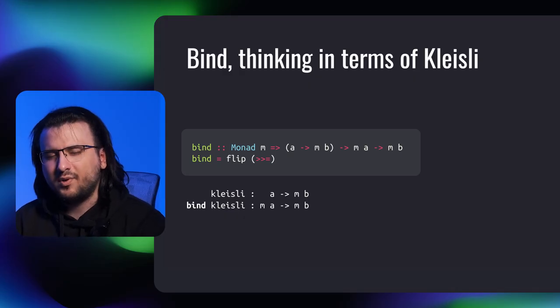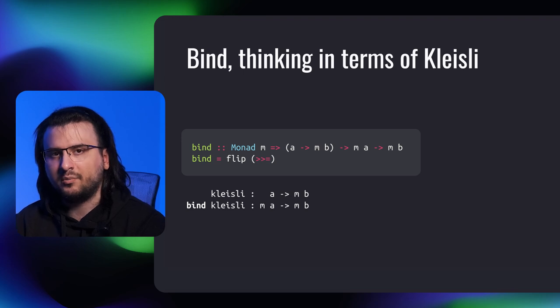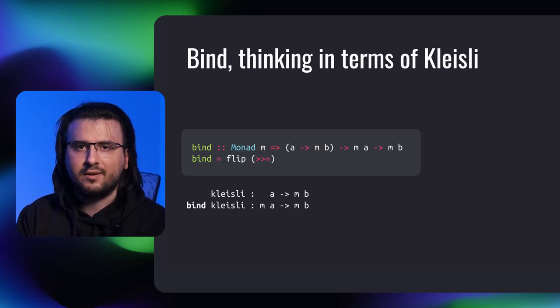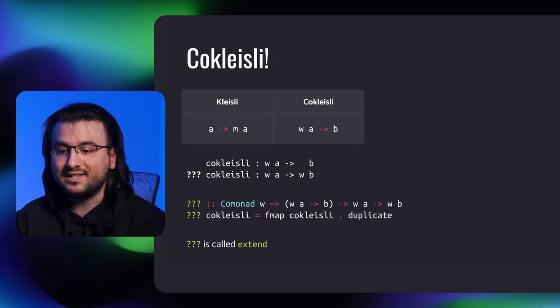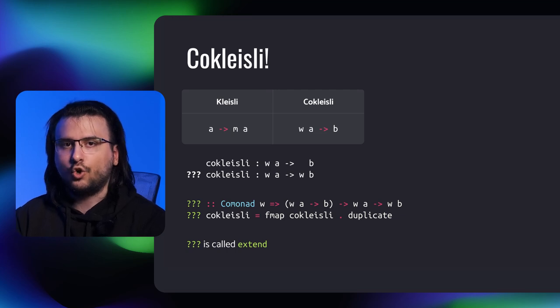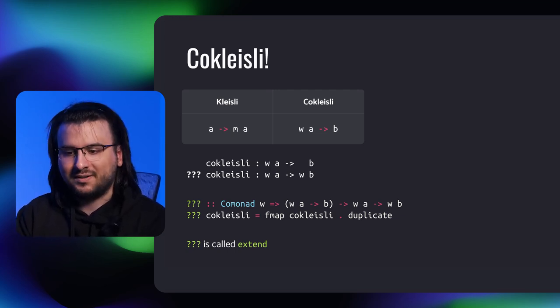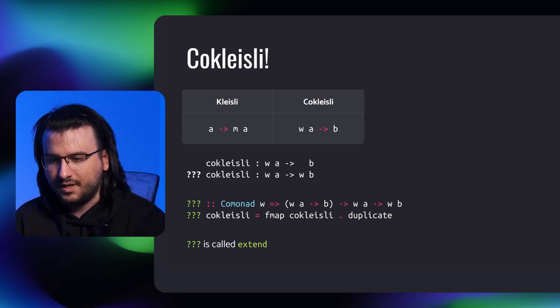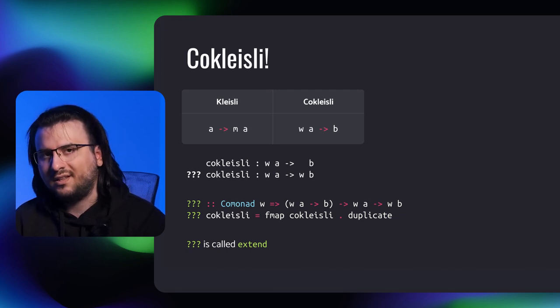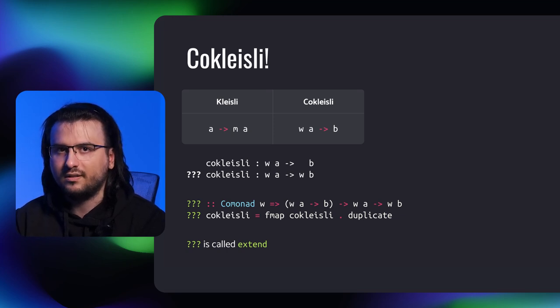It feels like something is missing in the definition of the type class though — something crucial. What about the dual of the bind operator? If we flip the arguments, it becomes more apparent how else we can interpret bind. Essentially, given a Kleisle arrow from a to mb, we automatically acquire an arrow from ma to mb. This is where the dual of the Kleisle arrow comes in — that is the co-Kleisle arrow: a function from a wrapped in some comonadic context w to b. Now we need to ask: having a co-Kleisle arrow from wa to b, can we automatically get a function from wa to wb?